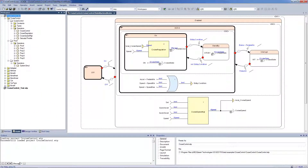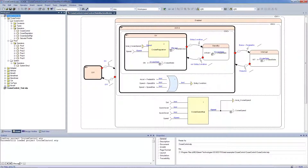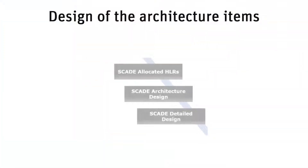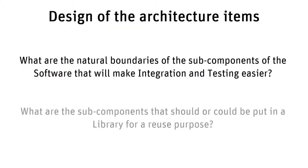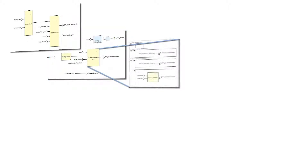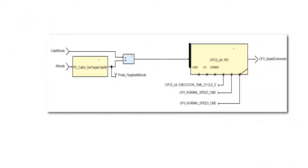A SCADE model is a combination of architecture items and low-level requirements, or LLRs. While LLRs are traced to HLRs, the design of software architecture items is driven by a decision-making process addressing: what are the natural boundaries of subcomponents that will make integration and testing easier, and what subcomponents should be put in a library for reuse? A model-based approach provides the appropriate abstraction standpoint to facilitate elaboration of software subcomponent architecture, and the SCADE Suite library practice allows you to easily refine reusable components.